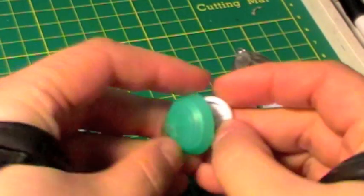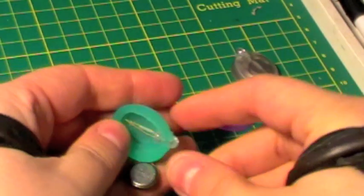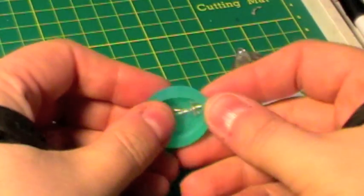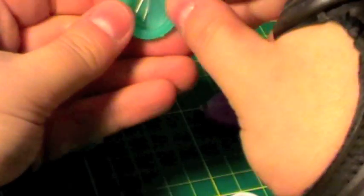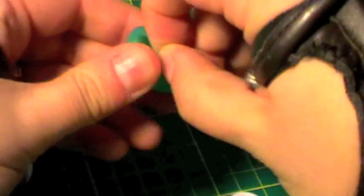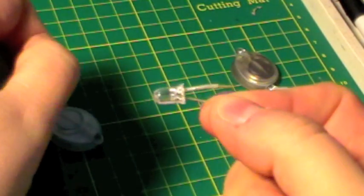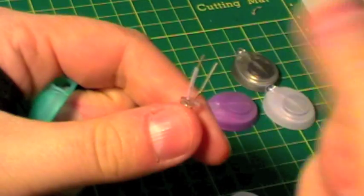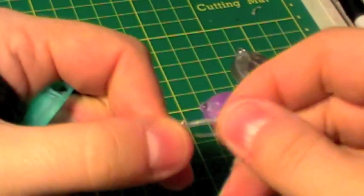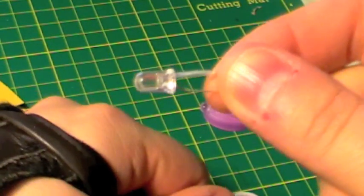They pop open really easy. Two button cell batteries come out and you have inside a whole white LED with its legs intact, ready for whatever application you wish to use it for.